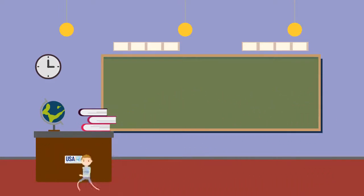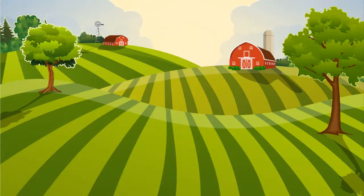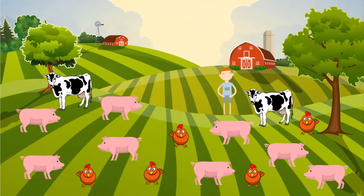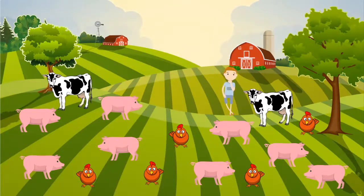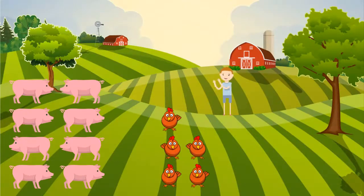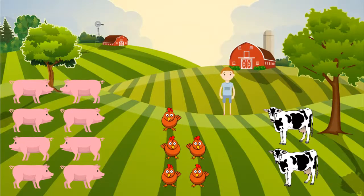Let's go to my friend's farm to work with data. My friend has three kinds of animals on her farm: pigs, chickens, and cows. It's hard to tell how many of each animal she has because they are all mixed up. We can separate the groups — let's put the pigs here, the chickens here, and the cows over there.